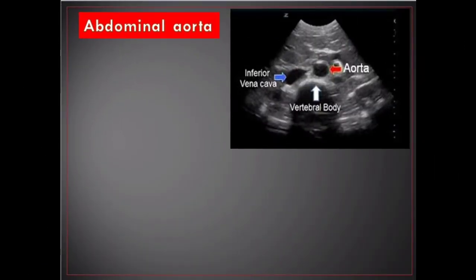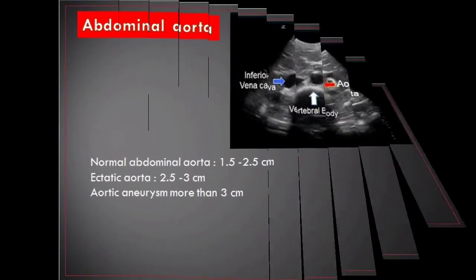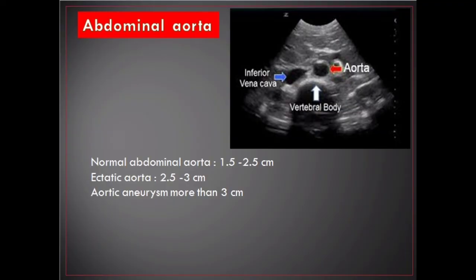Abdominal aorta spans from T12 to L4 spinal levels below the diaphragm. The proximal and mid abdominal aorta are collectively known as the suprarenal abdominal aorta; the distal portion is the infrarenal abdominal aorta. Normal abdominal aorta measures 1.5 to 2.5 centimeters; ectatic aorta is between 2.5 and 3 centimeters; aortic aneurysm is more than 3 centimeters.